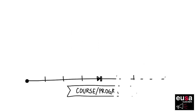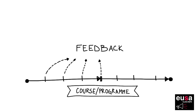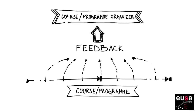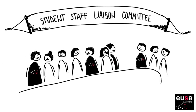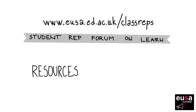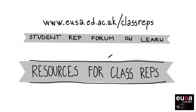Throughout each term, you should gather general feedback from other students about your course and how it's run. There are many different aspects of the learning experience that you can gather feedback on, and you can bring these issues and propose solutions directly to your course organiser throughout the term. You're also expected to prepare for and attend your subject area's Student Staff Liaison Meeting, or SSLC. This is where you can present feedback about specific issues or topics, such as the curriculum or learning resources. You can find a detailed list of suggested questions in the Class Rep Resources area, which can help you start conversations with students about these topics to gain feedback.